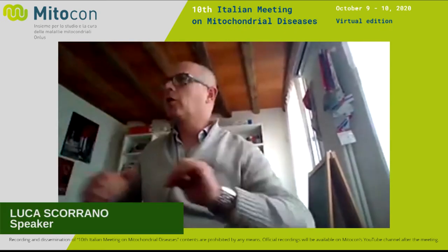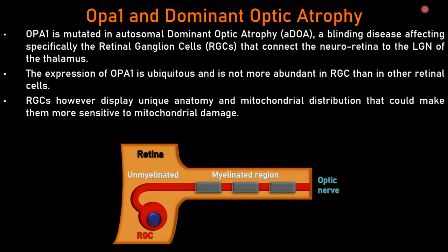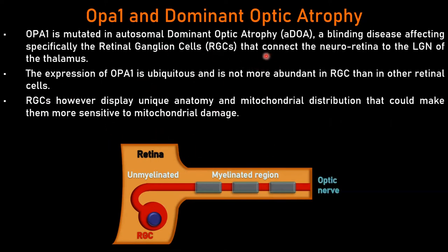Today we're going to talk about dominant optic atrophy, which is a focus of what we do in the lab. Vania gave us a basic introduction about the focus of my talk, which is OPA1. I'd like to remind you what autosomal dominant optic atrophy is — a blinding disease that affects specifically retinal ganglion cells that connect the neural retina, lateral geniculate, and hypothalamus. However, this is a multisystemic disease, but the clinical presentation of patients is mostly because of visual impairment.